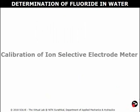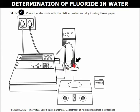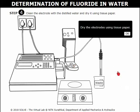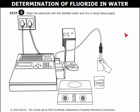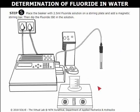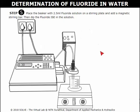Calibration of ion selective electrode method. Click here to place the electrode into the beaker. Click on the distilled water to clean the electrodes. Go through the instructions carefully. Dry it using tissue paper. Click on the beaker with 2.5 ml fluoride solution to place it on a stirring plate. Add a magnetic stirring bar and switch on the magnetic stirring machine. Then dip the fluoride ISE electrodes in the solution to determine the fluoride concentration. Switch on the magnet stirrer, then stop the stirrer after getting an accurate value.